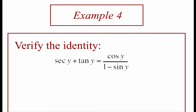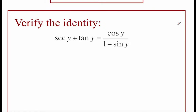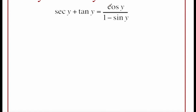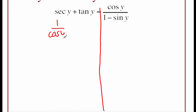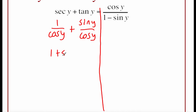Here's example four. We've got secant of y plus tangent of y, and we're going to show that's the same as cosine of y over 1 minus sine of y. Drawing my line down the middle. I'm going to work on the left-hand side — using a reciprocal identity, secant becomes 1 over cosine of y. For tangent, I'll use the quotient identity: that's sine of y over cosine of y. Our fractions already have common denominators, so let's combine them: 1 plus sine of y over cosine of y.